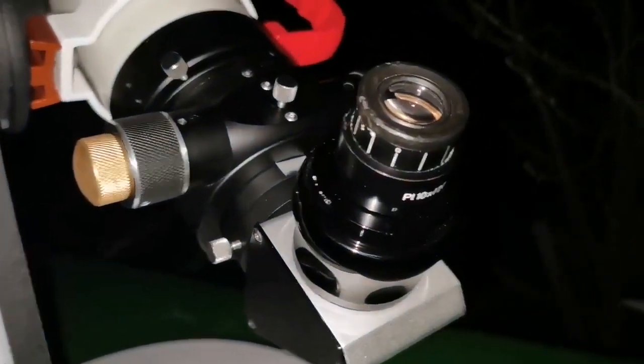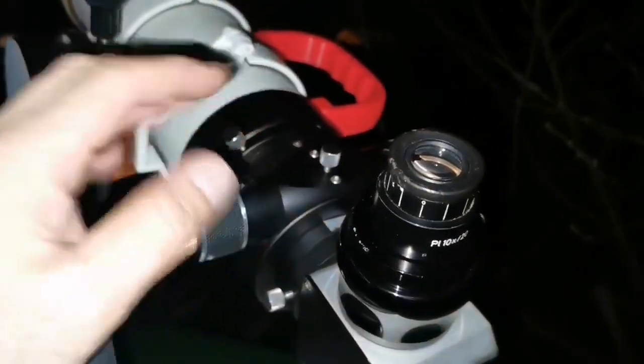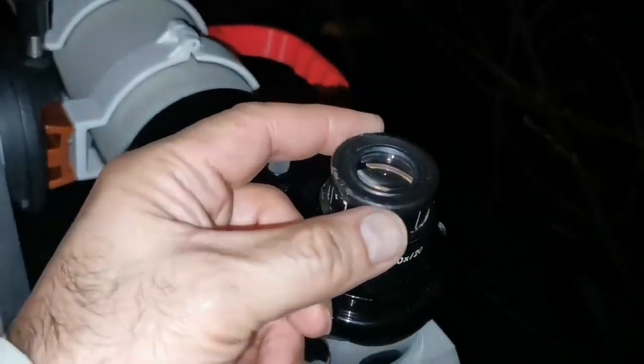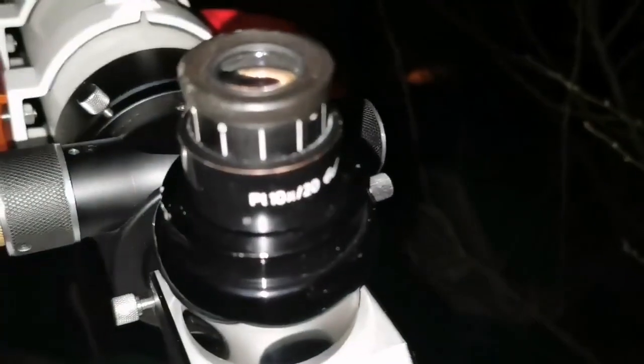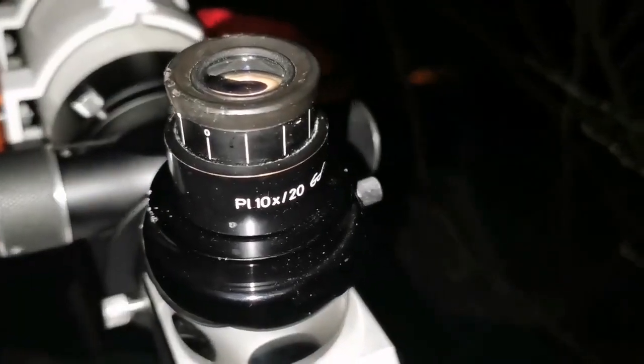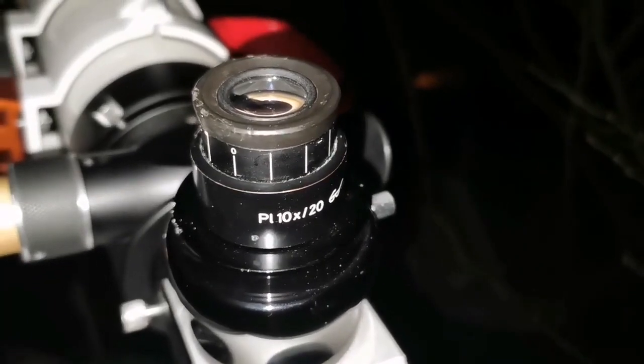I have my best view of the M42 Great Orion Nebula with this telescope and this Zeiss eyepiece microscope eyepiece. The specification is written here PL 10x20 that is equal to 25mm 57 degrees.